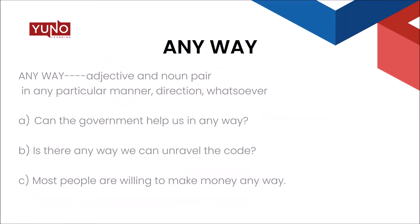Now we talk about the third word of the same family and category: 'any way'. But what is the difference between this third word and the first? In the first word 'anyway', it was one word. Now here 'any way' are two separate words. Since they are two separate words, both words have different grammatical functions. This is a pairing of an adjective and a noun — 'way' is a noun and 'any' becomes an adjective. So here 'any way' means 'however possible', 'in any particular way', or 'in any particular direction'.